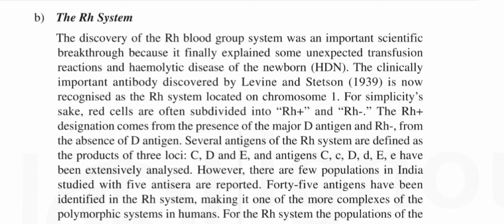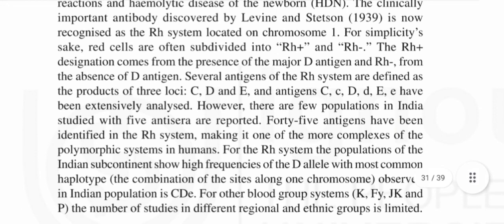However, there are few populations in India studied with 5 antisera reported. 45 antigens have been identified in the Rh system, making it one of the more complex of the polymorphic systems in humans. For the Rh system, the populations of the Indian subcontinent show high frequency of the D allele, with the most common haplotype — the combination of sites along one chromosome observed in Indian populations — being C, D, e.